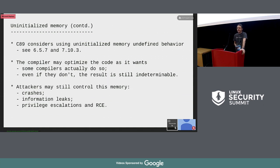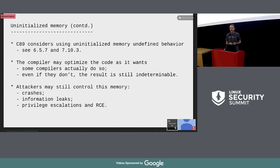According to C standards, starting from C89, this is considered undefined behavior, which means the compiler may do whatever it wants — optimize the code away, change it. Some compilers really do so, and even if they don't, the result is still undeterminable. This means that attackers may use such bugs by controlling this memory to provoke crashes, information leaks, RCEs, and so on.